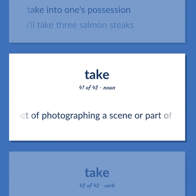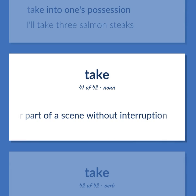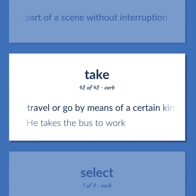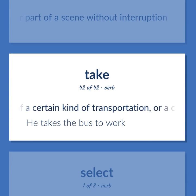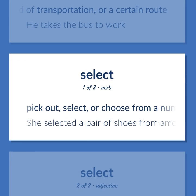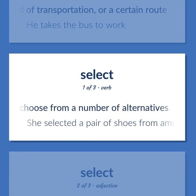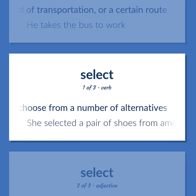The act of photographing a scene or part of a scene without interruption. Travel or go by means of a certain kind of transportation, or a certain route. He takes the bus to work. Pick out, select, or choose from a number of alternatives. She selected a pair of shoes from among the dozen the salesgirl had shown her.